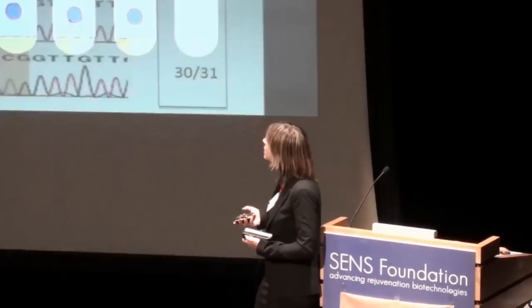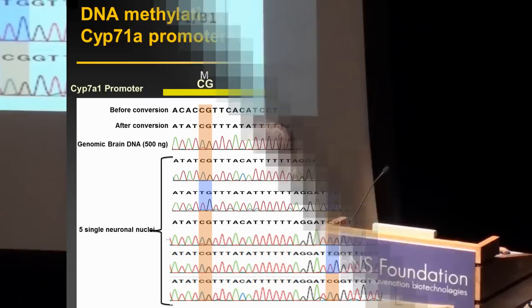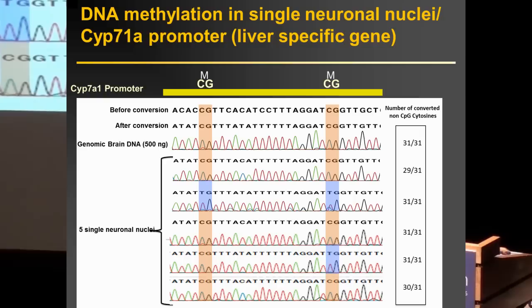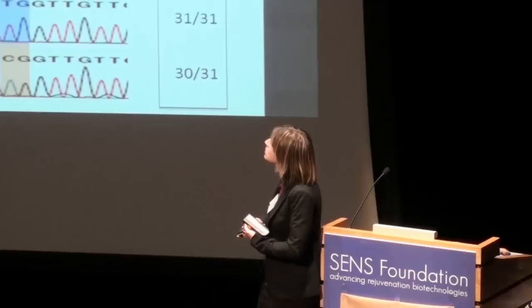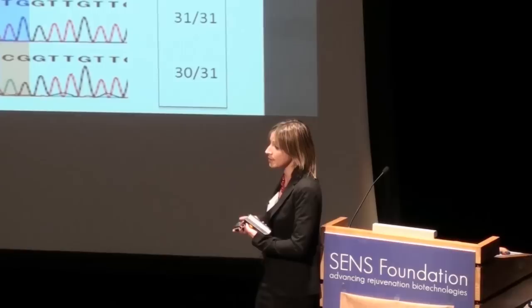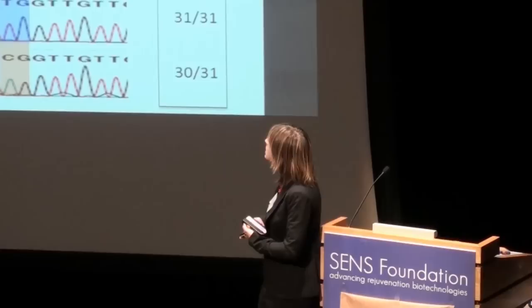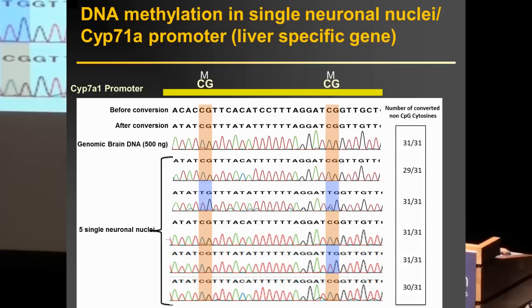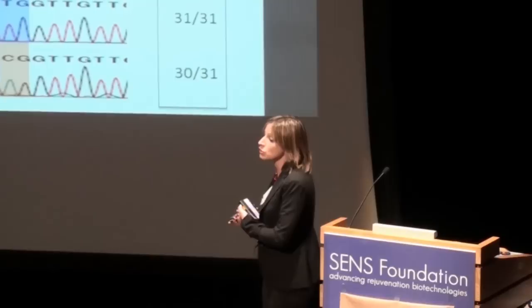Here I'm showing data obtained in neurons. We targeted the CYP7B1 promoter, which is a liver-specific gene that is not very much expressed in the brain, and we expect it to be fully methylated. After bisulfite treatment, the genomic brain DNA cytosines won't get converted — this is what we would expect for a fully methylated promoter. When we look at single neuronal nuclei, the majority of cytosines at those sites also won't get converted, so they are fully methylated. But some of them do get converted to T — these are examples of demethylating epimutation events. We get very high conversion on non-CpG cytosines.